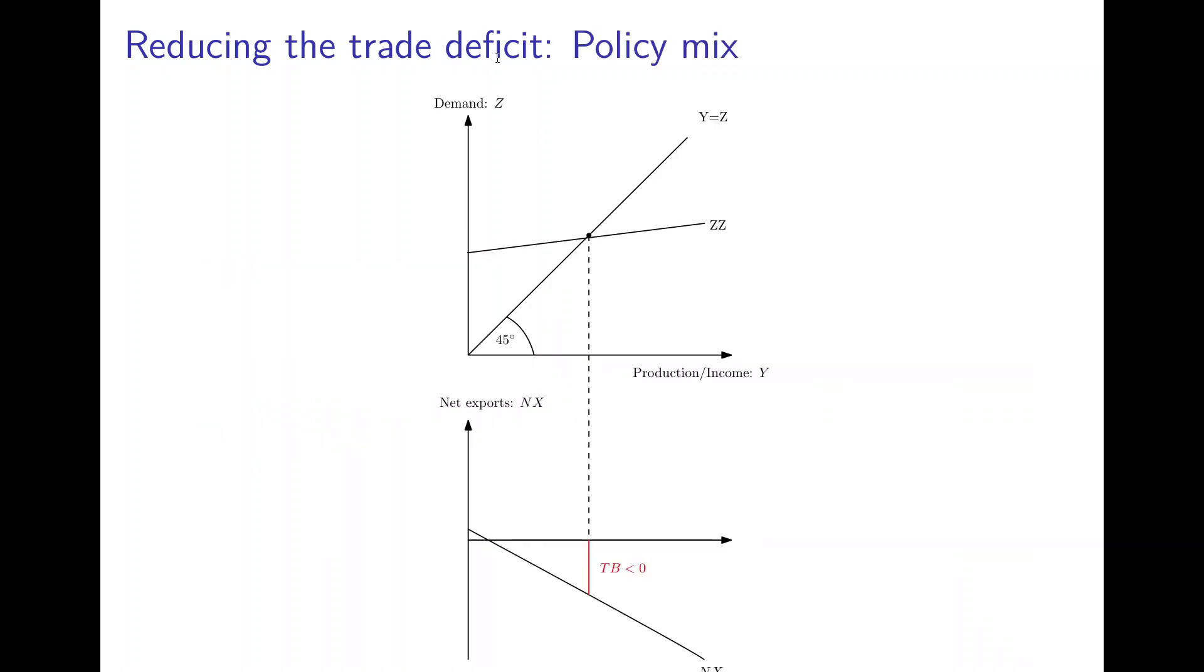We start again with our diagram for the goods market in an open economy. We have demand on the vertical axis, production income on the horizontal axis. We have the 45-degree line where demand equals supply, and the ZZ curve that intersects the 45-degree curve at market equilibrium.